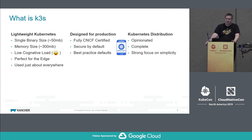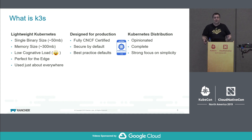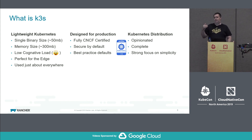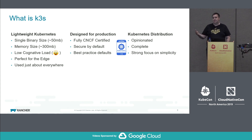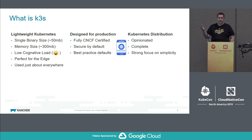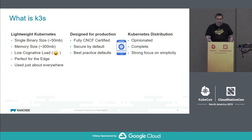One of the things about K3S is it puts a low cognitive load — it's really easy to use, and that's why it's taken off. It's perfect for the edge, but it's beyond that. We decided at Rancher Labs to invest in it because there was an obvious business opportunity for edge, but people are using it in so many different ways, including cloud, which we never really planned for.